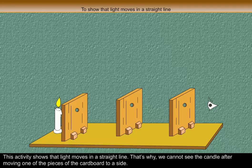This activity shows that light moves in a straight line. That's why we cannot see the candle after moving one of the pieces of the cardboard to a side.